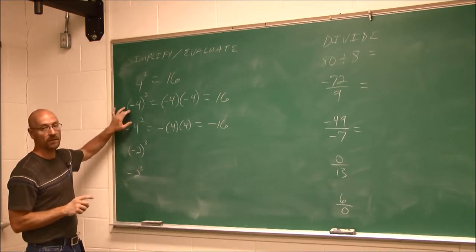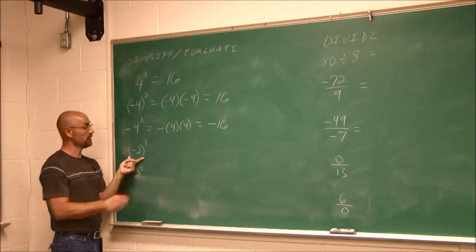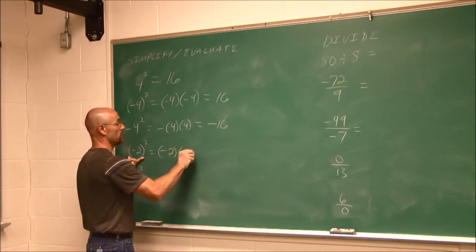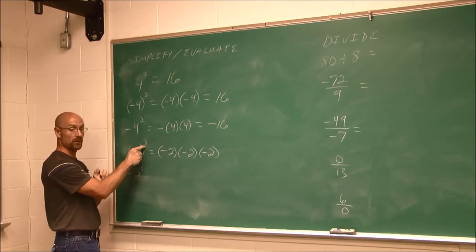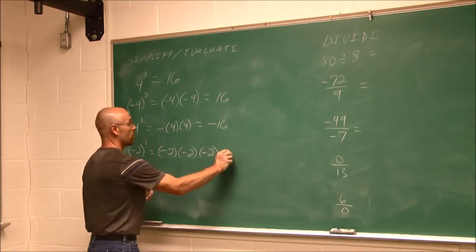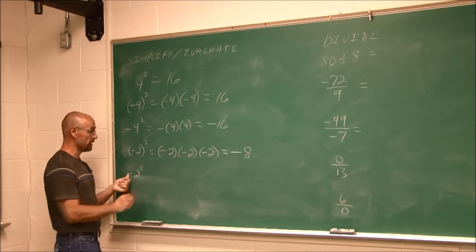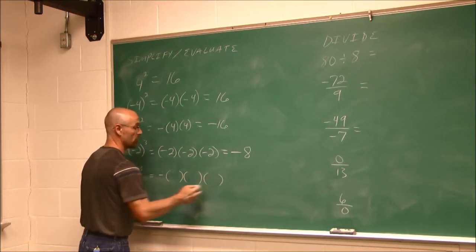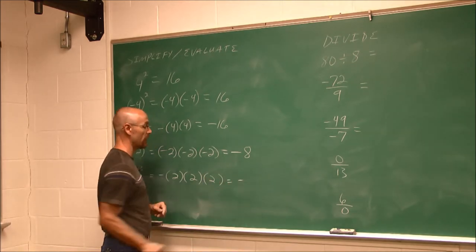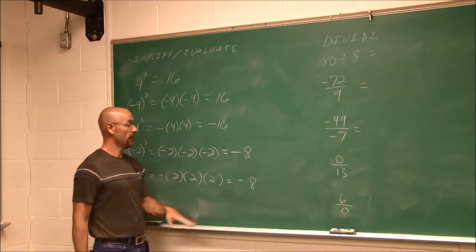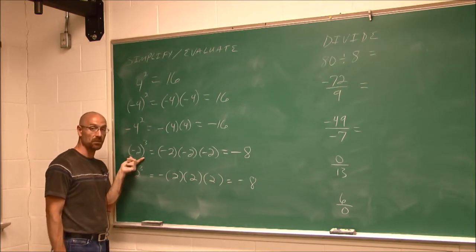But negative 4 squared without parentheses around the negative — the exponent is only adjacent to that 4. It says negative of (4 times 4), so with only one negative it is negative 16. Be careful — watch those parentheses. If a negative value is not within parentheses, the power does not apply to it. In contrast, negative 2 cubed in parentheses means negative 2 times negative 2 times negative 2: three negatives is odd, so the answer is negative, and 2 cubed is 8 — giving negative 8. Without parentheses, the negative is not included, so it's negative of (2 times 2 times 2) — one negative, negative 8.